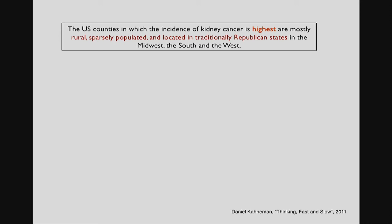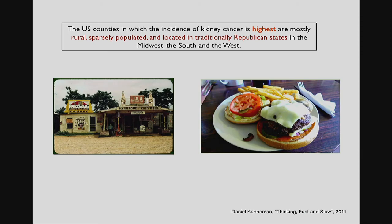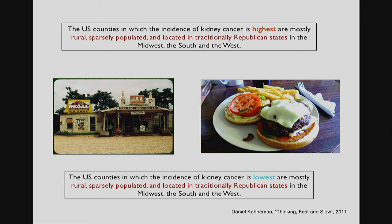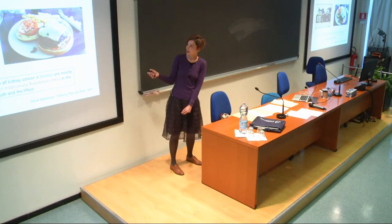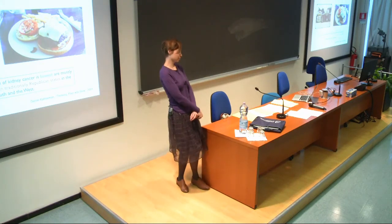It started with the statement that the US counties in which the incidence of kidney cancer is highest are mostly rural, sparsely populated, and located in the traditionally Republican states in the Midwest, the South and the West. If you know anything about world politics, this makes sense — you think about bad food, poor people. They're not very healthy, they get sick. But there's a similar statement which is also true: the US counties in which the incidence of kidney cancer is lowest are mostly rural, sparsely populated, and located in traditionally Republican states in the Midwest, the South and the West. These are exactly the same two sentences with only the words 'highest' and 'lowest' changed — and both are true. So what's going on?